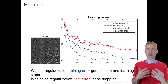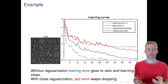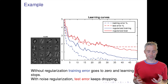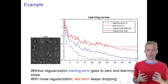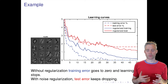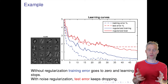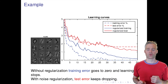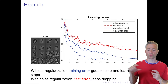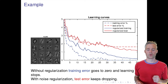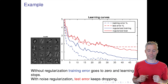On the other hand, if we add noise to the data, we can see that we get a better test error and a higher training error. So the test and the training error will be closer together if we have done the regularization successfully.